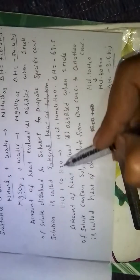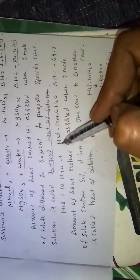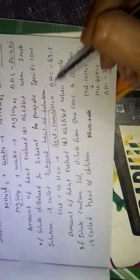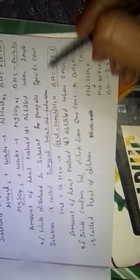For example, HCl in 10H2O gives HCl 10H2O solution. Here delta H value minus 69.5.